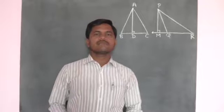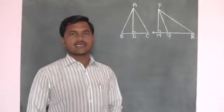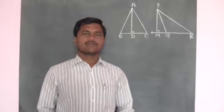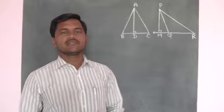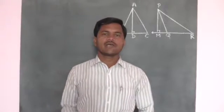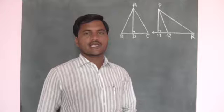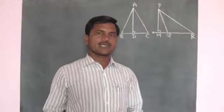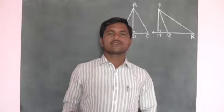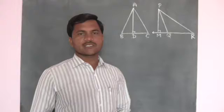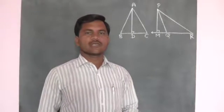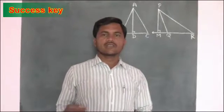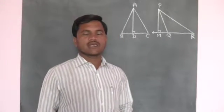Hello friends. We have studied the properties of a triangle in the 9th class. The sum of all angles of a triangle is 180 degrees. The measure of the exterior angle of a triangle is equal to the sum of the measure of its remote interior angles. The angle opposite to the greater side of a triangle is greater. The sum of the lengths of any two sides of a triangle is greater than the third side. Those and other properties we studied in the 9th class.